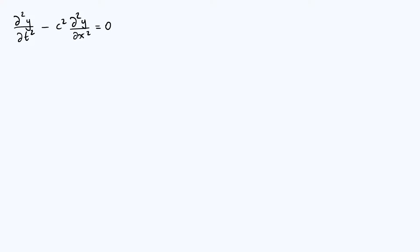Hello everyone. In this video we're going to derive the most general solution to the wave equation. We're going to ignore damping for the moment — I'm going to cover that in my next video — but the undamped wave equation is shown at the top left here. I derived this a couple of videos ago. The method we're going to use is to take the Fourier transform of this partial differential equation.